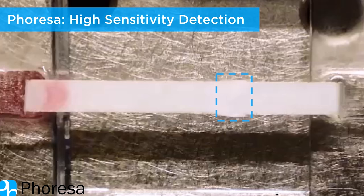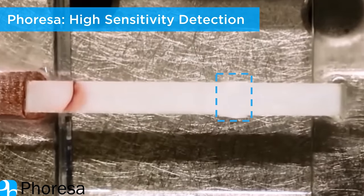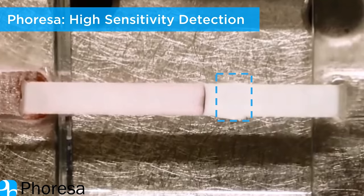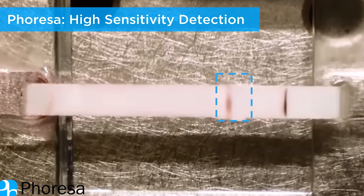The technology entails that we apply a small electric field, and by doing that, we concentrate and separate the stuff that we don't want to detect. And by concentrating the pathogen that we're trying to detect, we increase the sensitivity of the current pregnancy test.